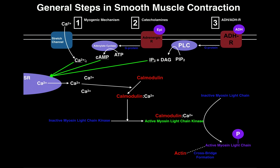In any one of these three cases, these second messengers converge on the smooth muscle cell's sarcoplasmic reticulum. Just like in skeletal or cardiac muscle, this sarcoplasmic reticulum is loaded with calcium ions. Whether you have intracellular calcium, cyclic AMP, or IP3, all three of these second messengers trigger the SR to release calcium into the cytoplasm of the cell, giving us a flood of intracellular calcium.